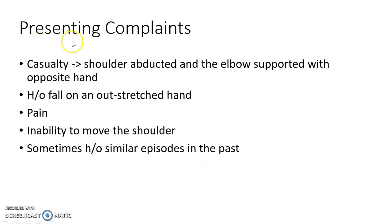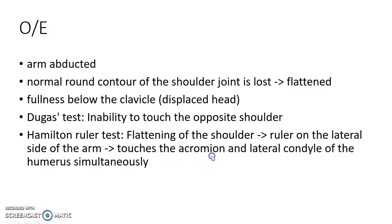The patient typically presents to casualty with the shoulder abducted and the elbow supported with the opposite hand, giving a history of fall on an outstretched hand. There will be pain and inability to move the shoulder, and sometimes a history of similar episodes in the past. On examination, the arm is abducted and the normal round contour of the shoulder joint is lost and flattened, with fullness below the clavicle due to the displaced head.